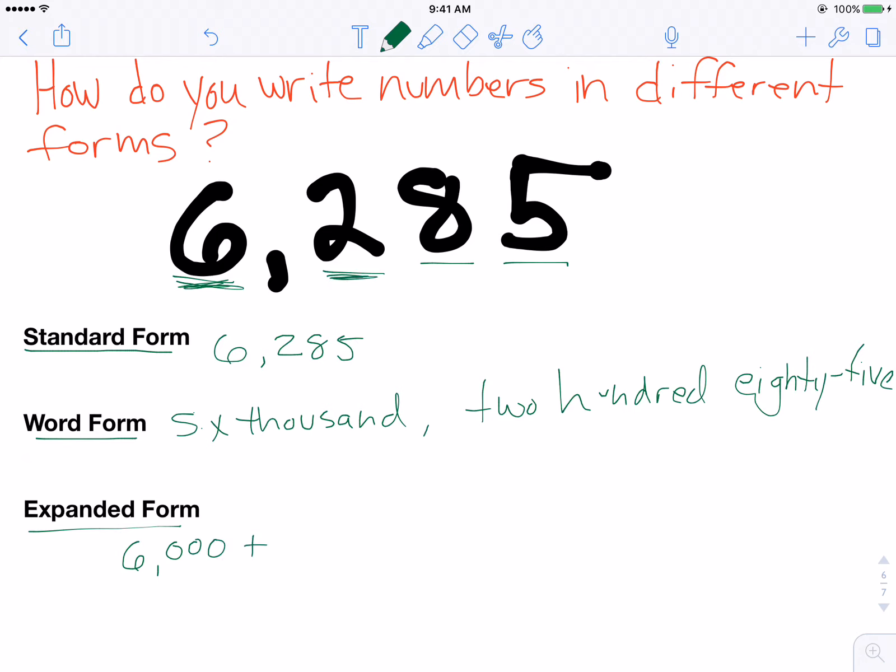Plus there's a 2 in the hundreds place, which has a value of 200. And there are 8 tens, because there's an 8 in the tens place, which has a value of 80. And there's 5 ones, which has a value of 5, because it's 5 in the ones place. So that would be how you would write the expanded form of the number.